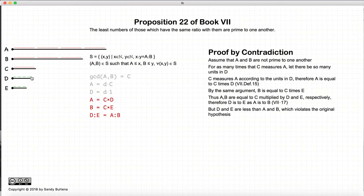But by definition D and E are smaller than A and B, which violates our original condition that A and B are the smallest numbers possible to create that ratio A to B. So we have our contradiction.